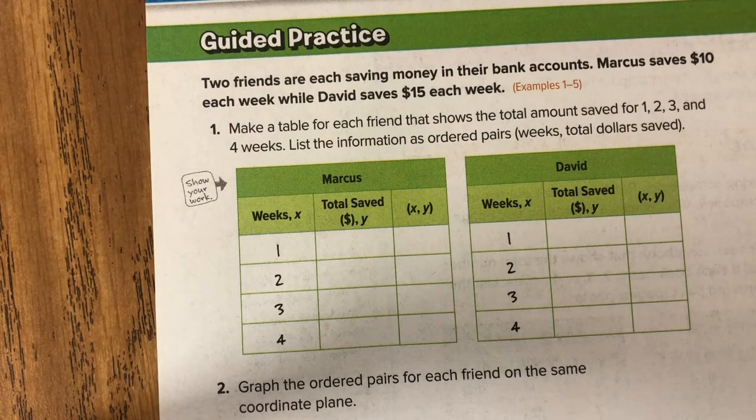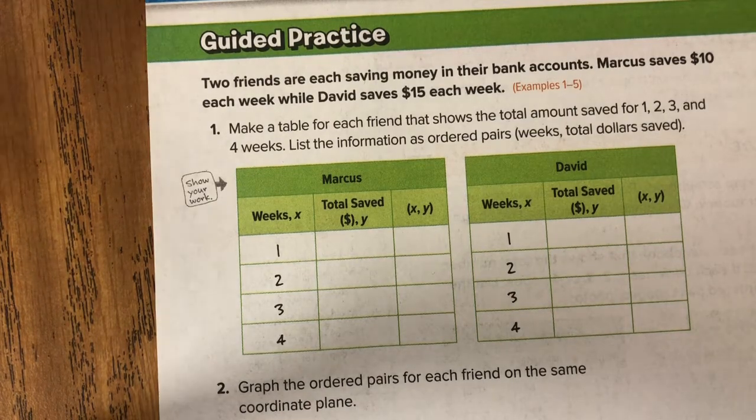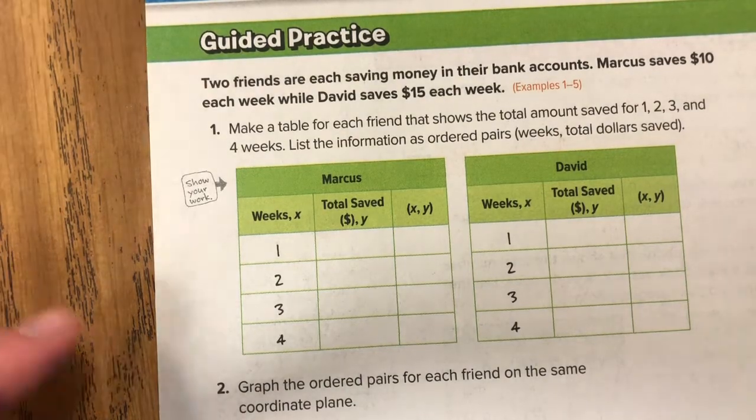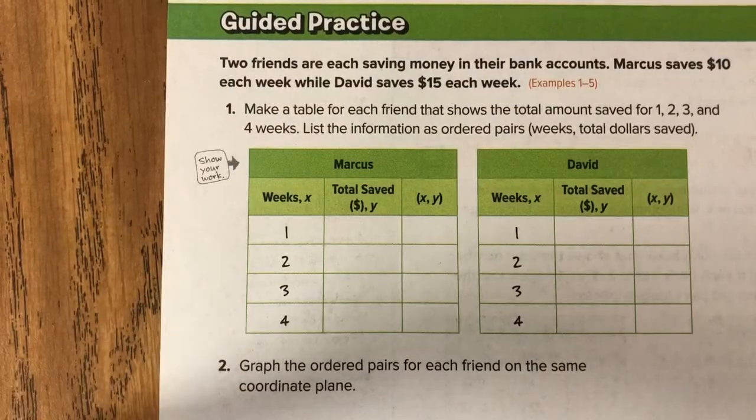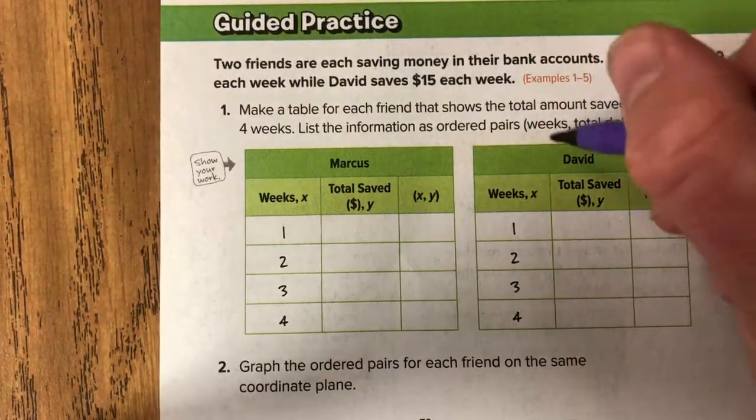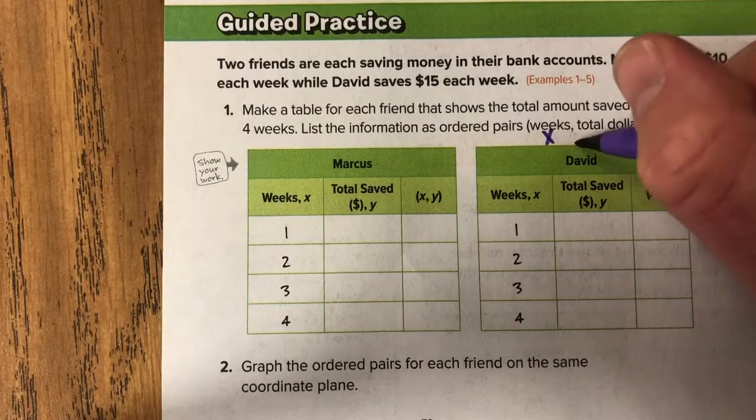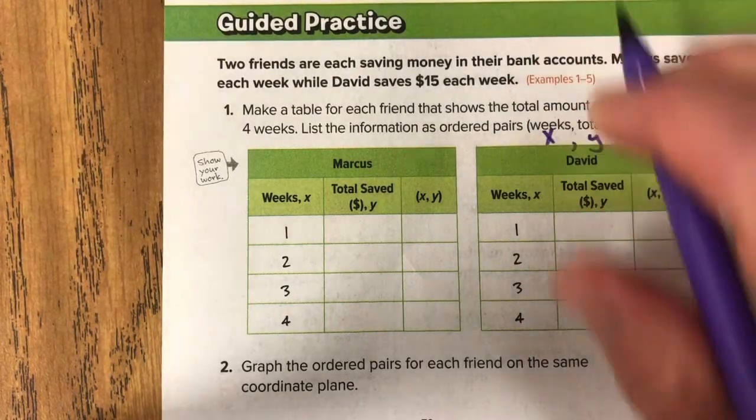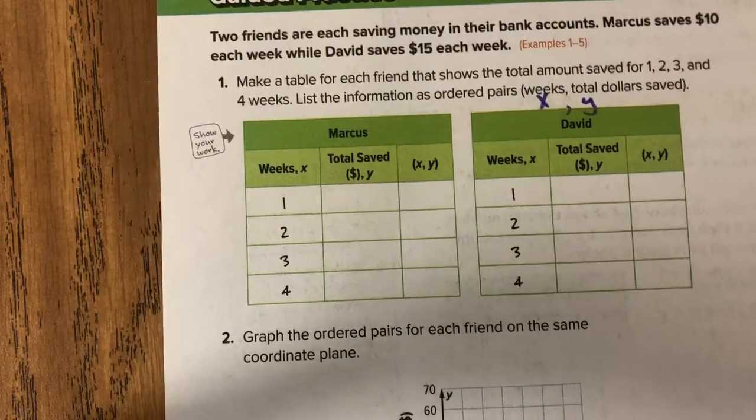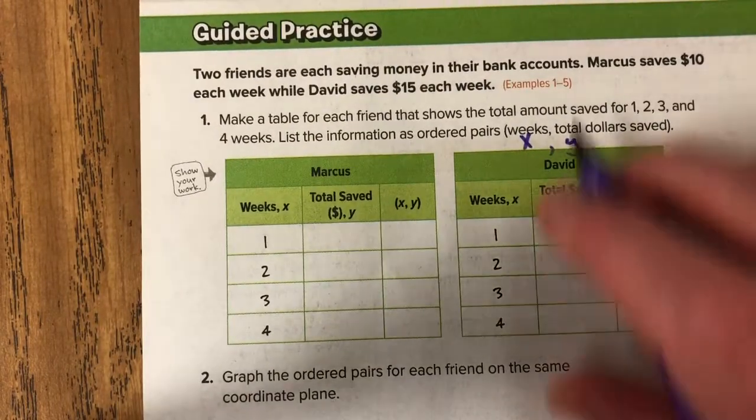All right so let's make a table for each friend that shows the total amount saved for 1, 2, 3, and 4 weeks. List the information as ordered pairs. Weeks is our X and total dollar saved is going to be our Y. If you're not familiar with X and Y I'll talk a little bit more about that when we start looking at the graph but let's get the table filled in first.